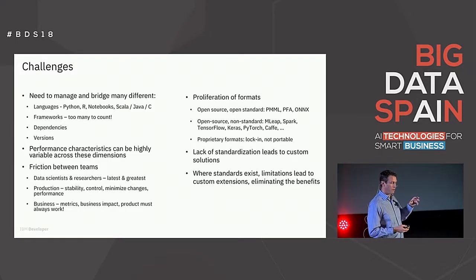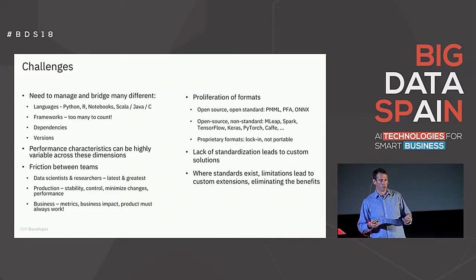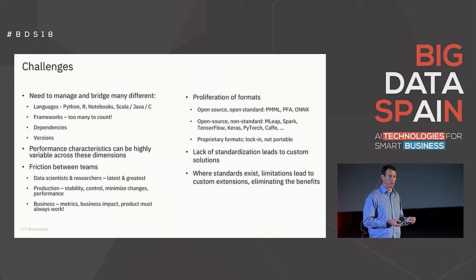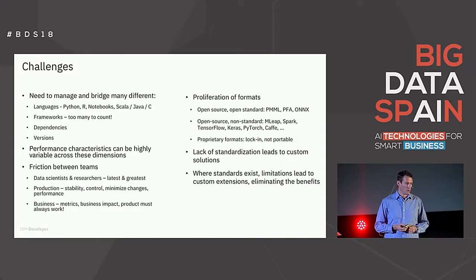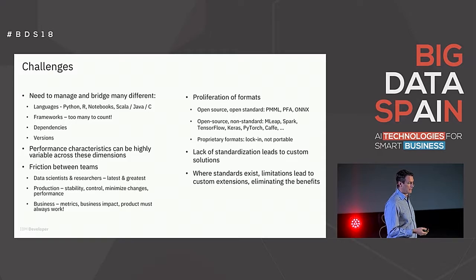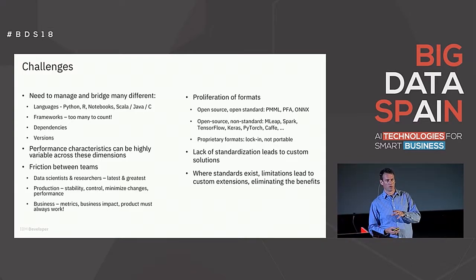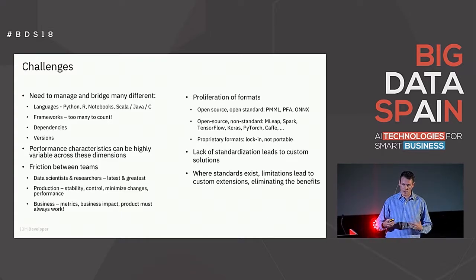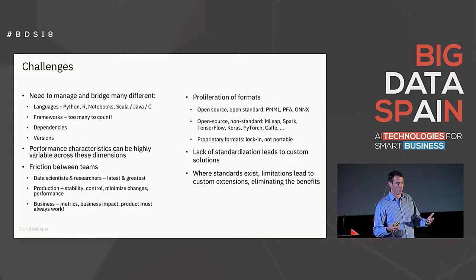With this proliferation of languages and frameworks comes a proliferation of formats. Each framework has its own format — open source but non-standard. MLEAP, Spark, TensorFlow, Keras, PyTorch all have their own internal format for representing models, saving them, saving pipelines, exporting them. You also have proprietary formats which may be very performant but completely lock you in to one particular product. And then there are open source, open standard formats, which is what I'll be talking about today, including PFA. This lack of standardization leads inevitably to custom solutions — there's always custom code, and where some standards do exist, the limitations lead to custom extensions. The minute you extend a standard with a non-standard component, you lose all the benefits of standardization.